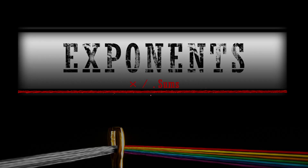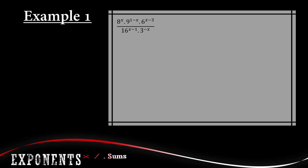We are now going to look at the next type of exponent sums. The main difference between these and the previous ones is that these are one term over one term. We can also identify them by seeing that all the bases are bigger numbers and all the variables are in the exponents. There are certain steps we can follow that make the procedure for these sums rather easy, and I'm going to write them out as I do the steps.